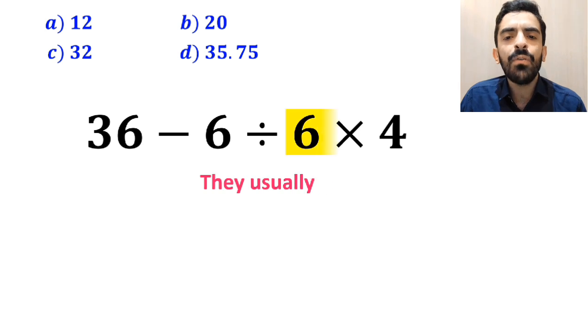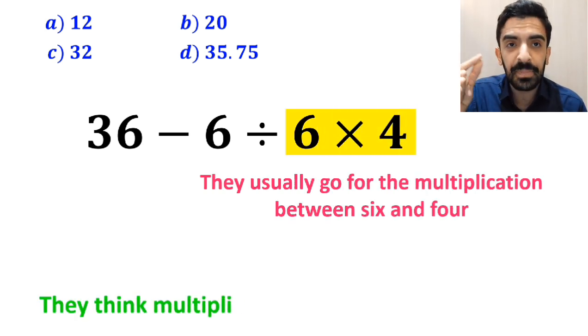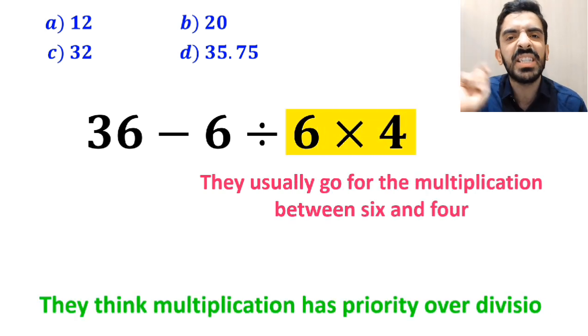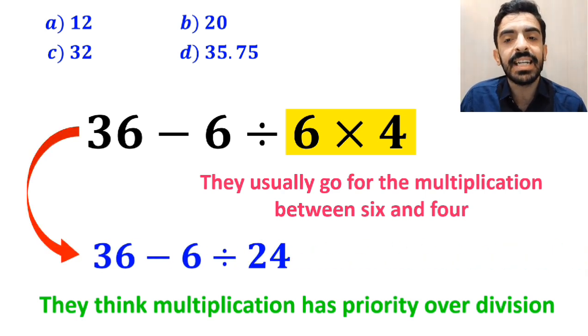In the next step, they usually go for the multiplication between 6 and 4 because they think multiplication has priority over division, so they rewrite this expression as 36 minus 6 divided by 24.